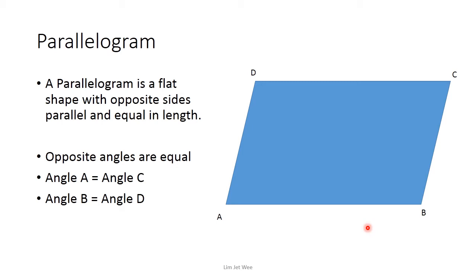The opposite sides are parallel, but at the same time they are equal in length. So the length of AB is the same as the length of CD, and the length of AD is the same as the length of BC. That is what is defined here in the definition.